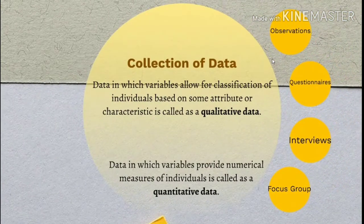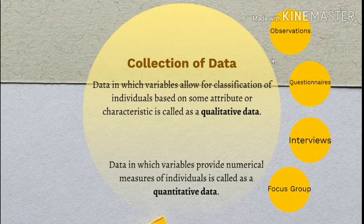Collection of data: mainly there are two types of data — qualitative and quantitative. Data in which variables allow for classification of individuals based on some attribute or characteristic is called qualitative data. Data in which variables provide a numerical measure of individuals is called quantitative data.